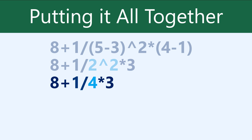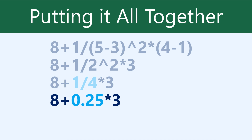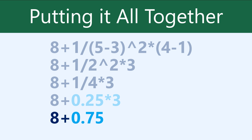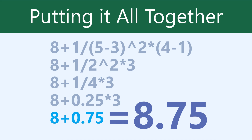Next, we'll do the multiplication and division, going from left to right. And now all that's left is addition, and that gives us our answer: 8.75. That's the same answer Google Sheets would give you if you entered the formula in your spreadsheet.